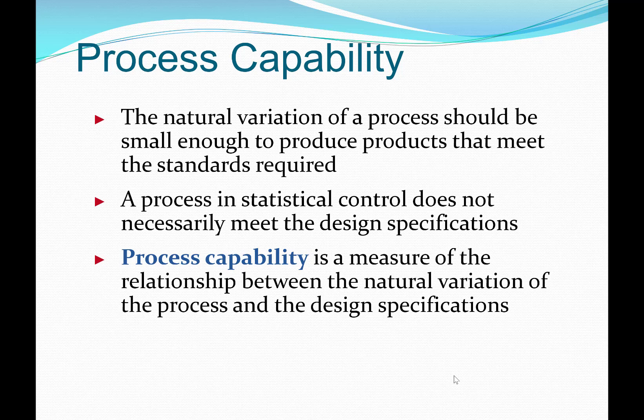Process capability must only be analyzed after the process is brought within statistical control. We used statistical process control and control charting to see whether or not a process is in control. Once that is done, we can analyze or assess process capability. The natural variation of a process should be small enough to produce products that meet the standards required. A process in statistical control does not necessarily meet the design specifications. Process capability is a measure of the relationship between the natural variation of the process and the design specifications.